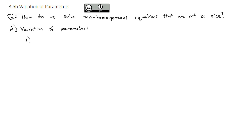Before we get into variation of parameters, I want to review something from linear algebra, or for those of you who have not taken linear algebra yet, introduce something called Cramer's Rule.